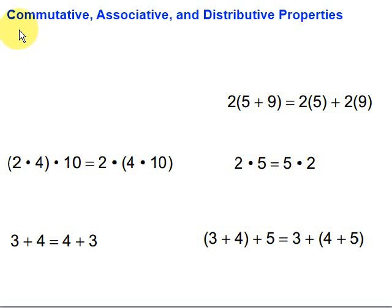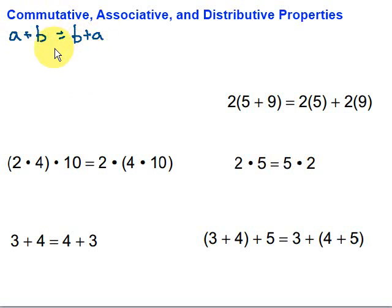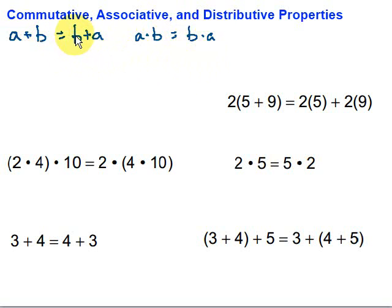We start with the commutative property, which looks like this: a plus b is equal to b plus a. That applies to addition, or we can have a times b, and that's equal to b times a. In other words, we can add or multiply in any order and come up with the same thing.